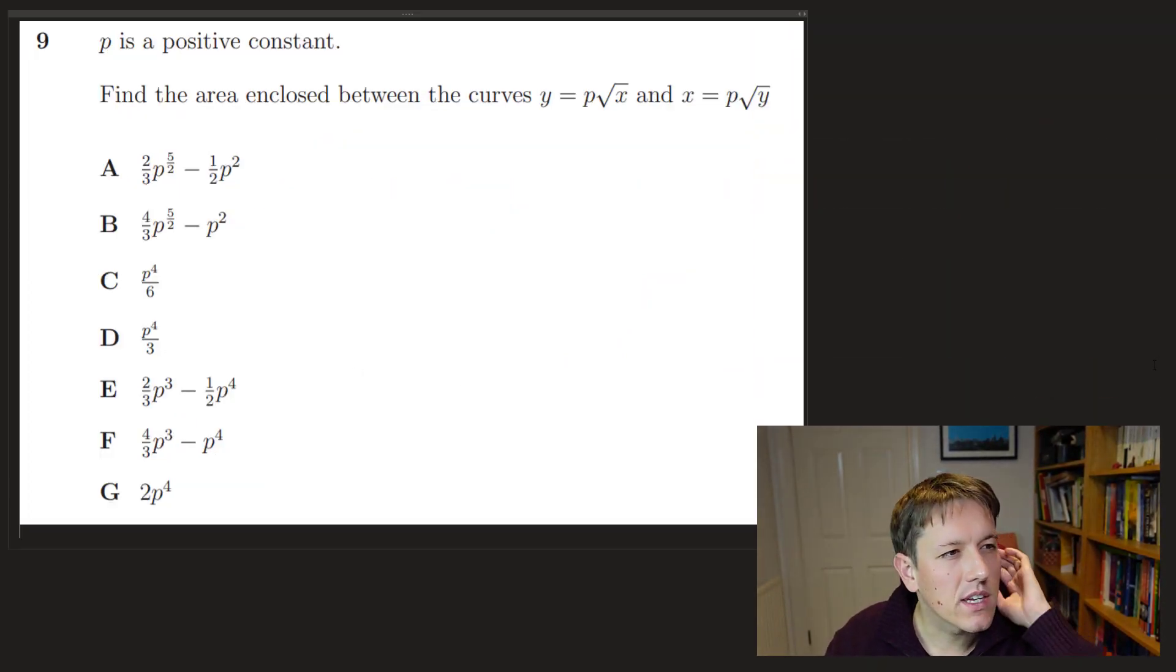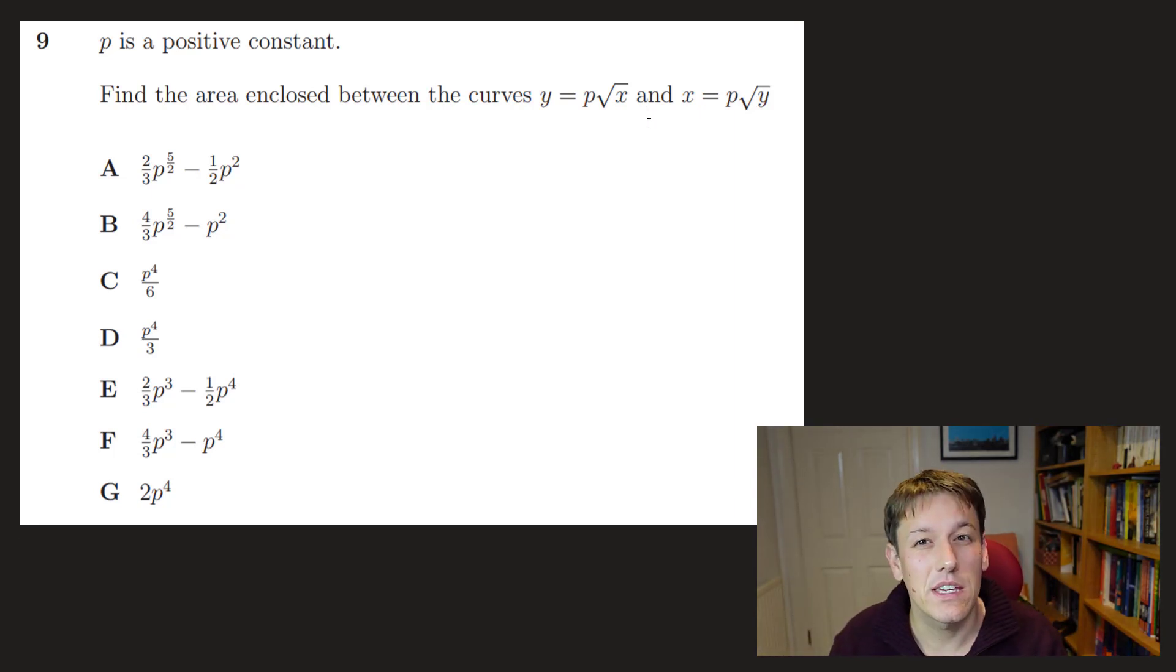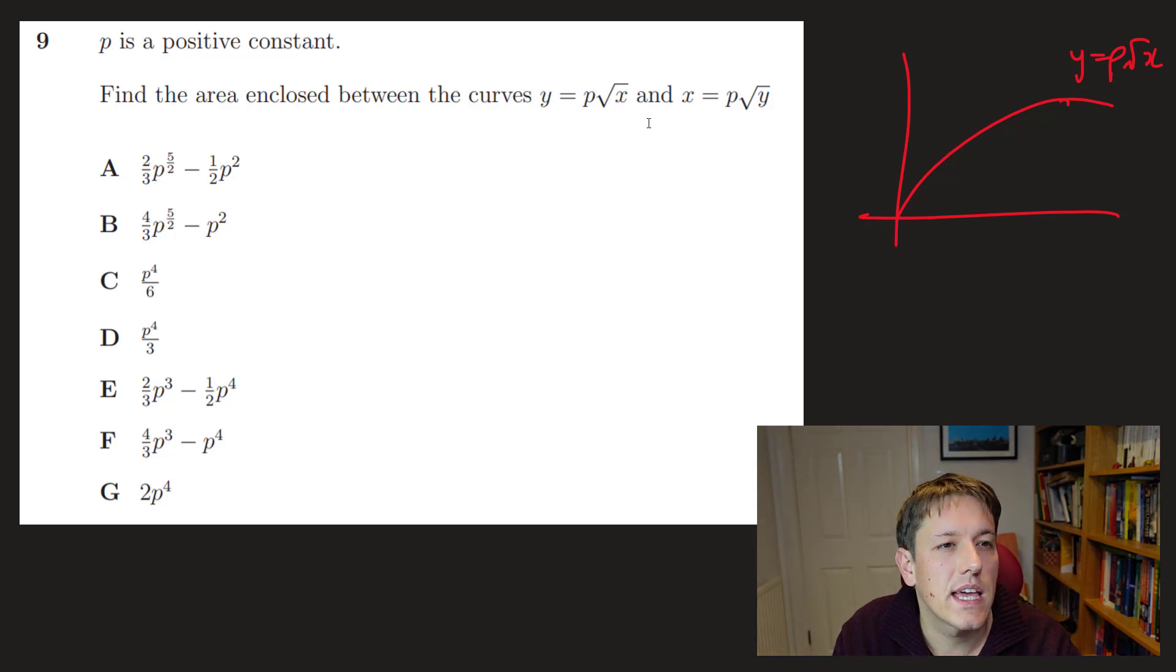Okay, slightly tricky here. Find the error enclosed by the curves y equals p root x and x equals p root y. So, okay, so just roughly, okay, p times root x is going to look something like this. This is just going to be, right, and x equals p root y. So that's going to be root y is x over p. So y is x squared over p squared. So it's going to be like an x squared curve. And so the area we're going to be looking for is here.